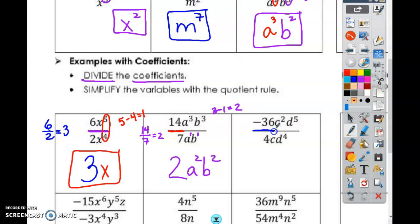What about this one right here? Divide. Negative 36 divided by 4. Negative 36 divided by 4 equals negative 9. So it's going to be negative 9. Subtract the c. 2 minus 1 equals 1. And then subtract the d's. 5 minus 4 equals 1. So that is your answer. If you don't put a number, it's a 1. This is an imaginary 1 and this is an imaginary 1.